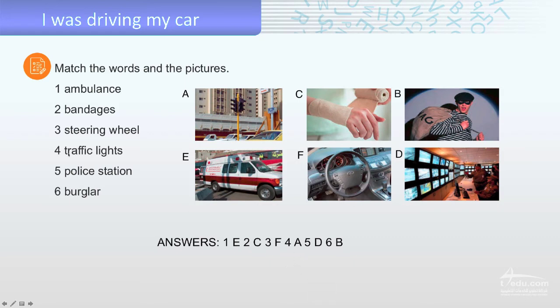Number four A, traffic lights. Number five D, police station. Look at police men. Number six B, burglar. This one steals money, burglar.